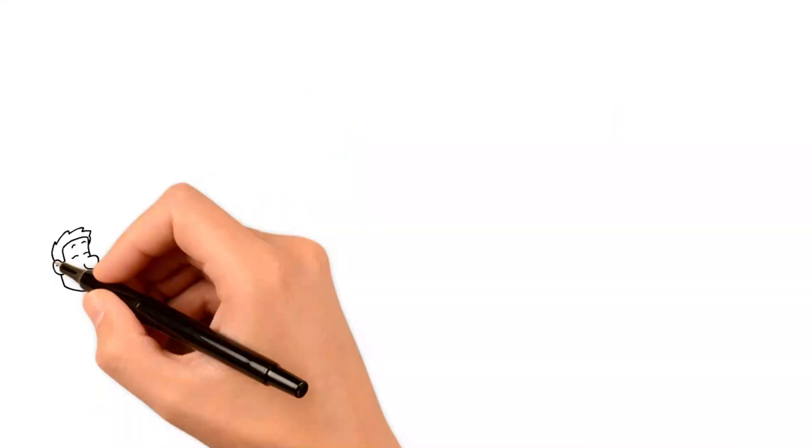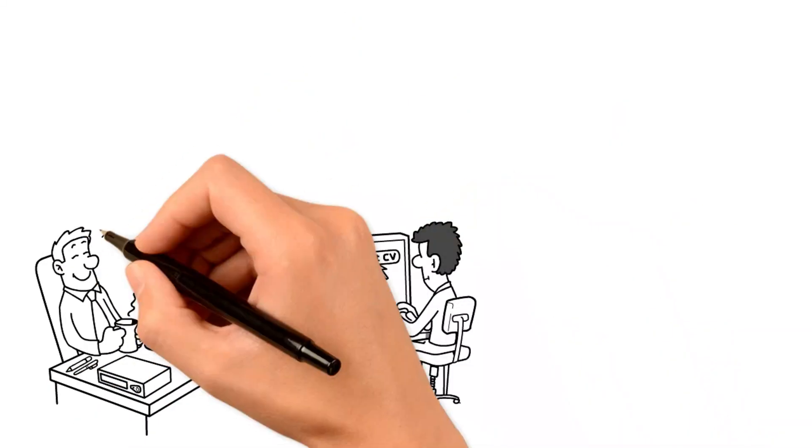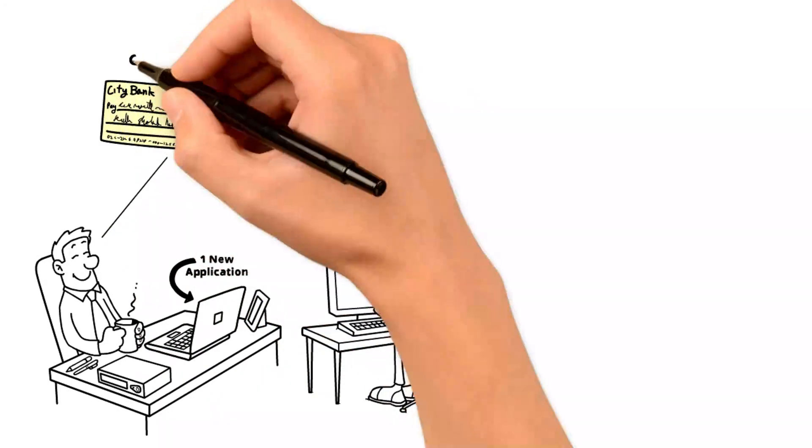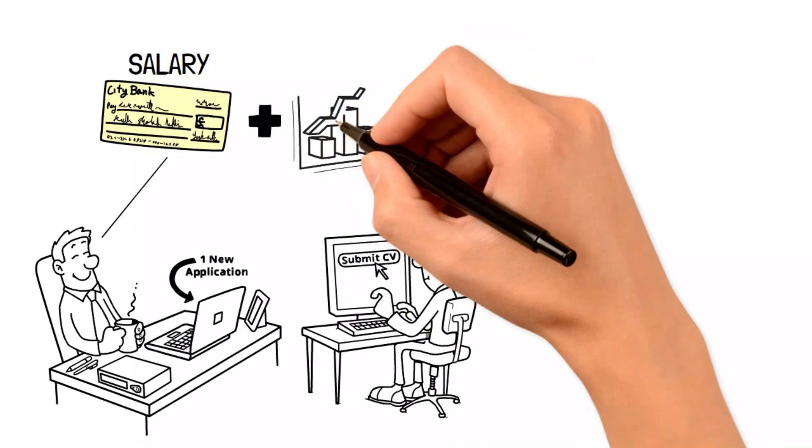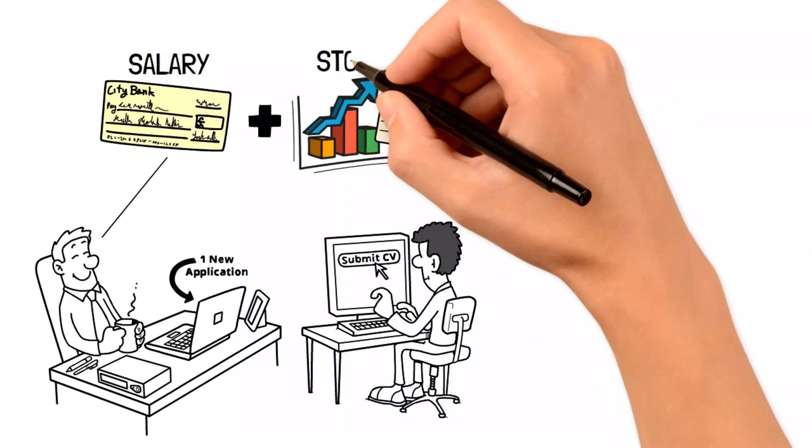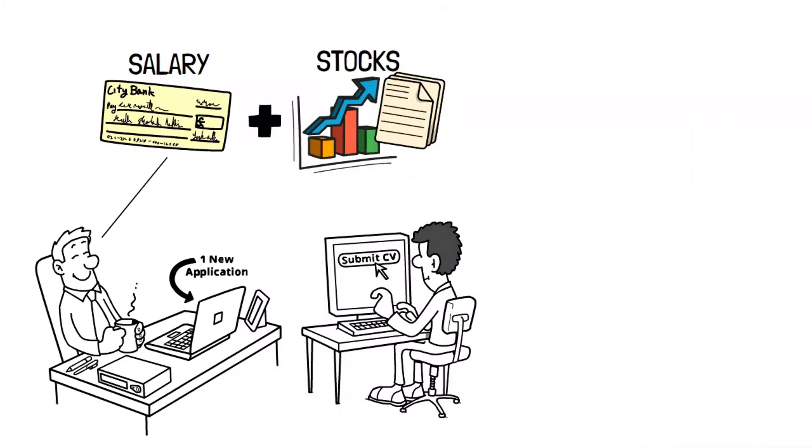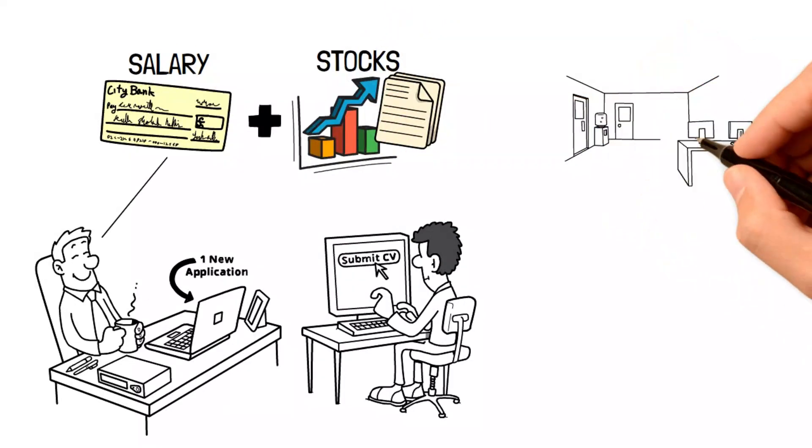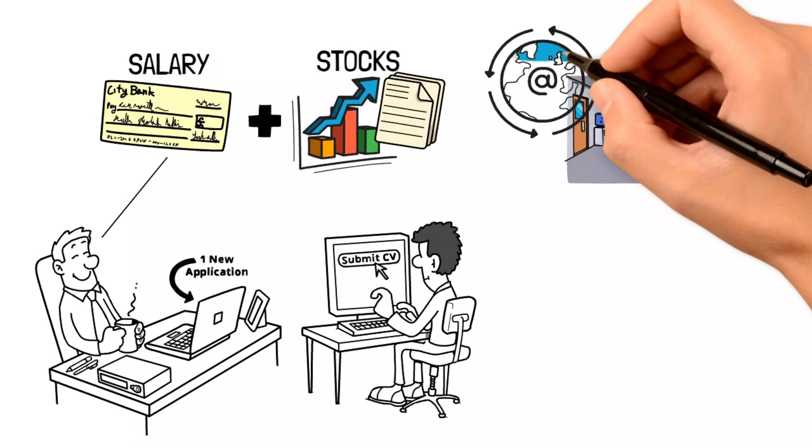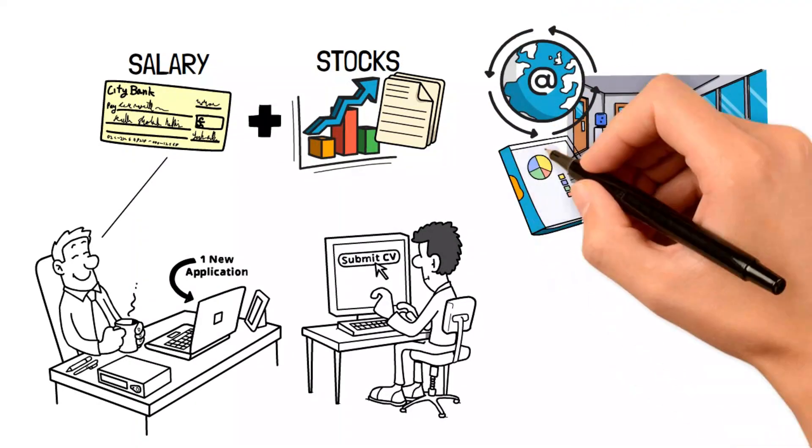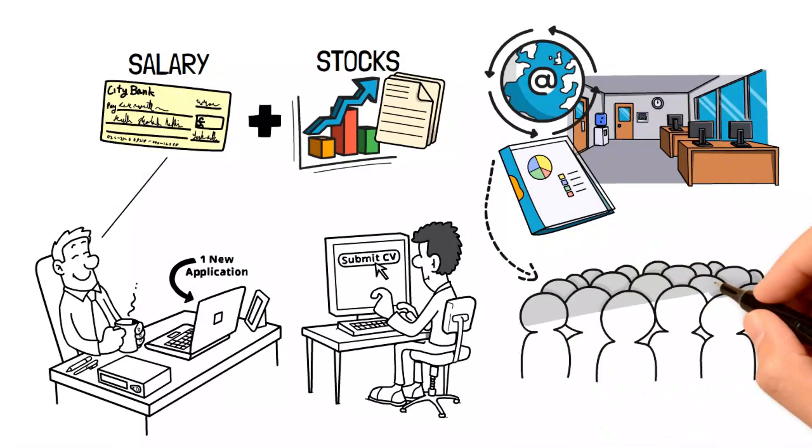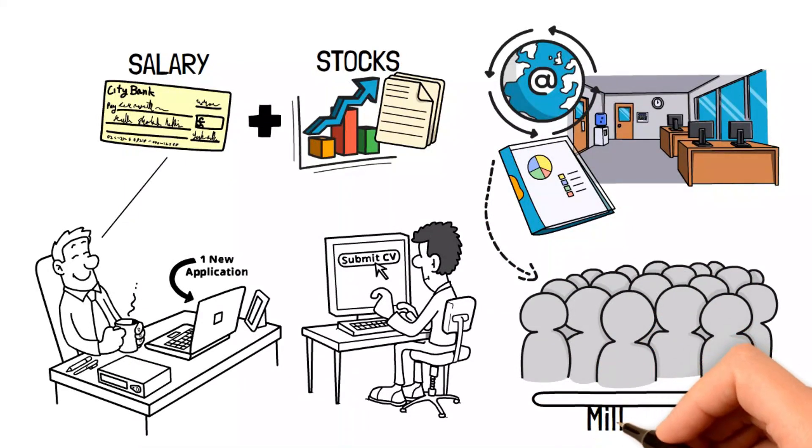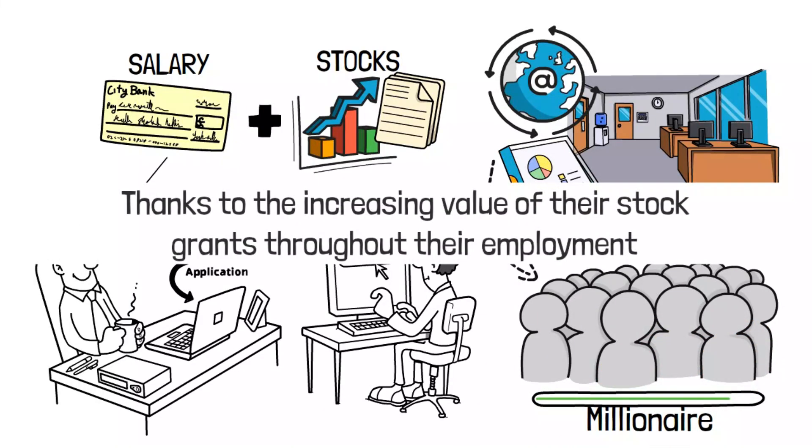When looking for a job, look for opportunities that can give you a stake in the company. By buying more shares of your stock, your stake in the company grows, and you get more significant percentage of the company's assets and earnings. In information technology, workers receive significant amounts of company stock as rewards. And this has made people in such fields become multi-millionaires after joining these rapidly expanding companies, all thanks to the increasing value of their stock grants throughout their employment.